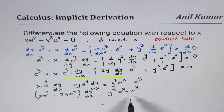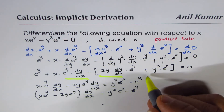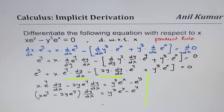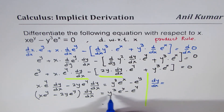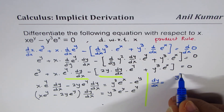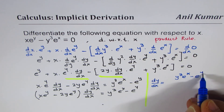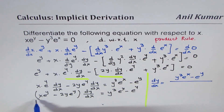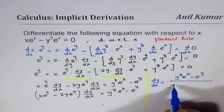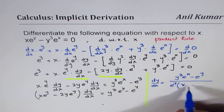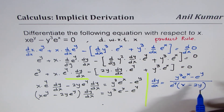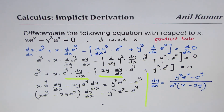So that's what we get, and now we can write down the derivative dy/dx. So dy/dx is equal to — the numerator will be y cubed e to the power of x minus e to the power of y, divided by x e to the power of y minus 2y e to the power of y. If you want, you can factor out e to the power of y to get x minus 2y in the brackets. So that becomes the derivative of the given function.